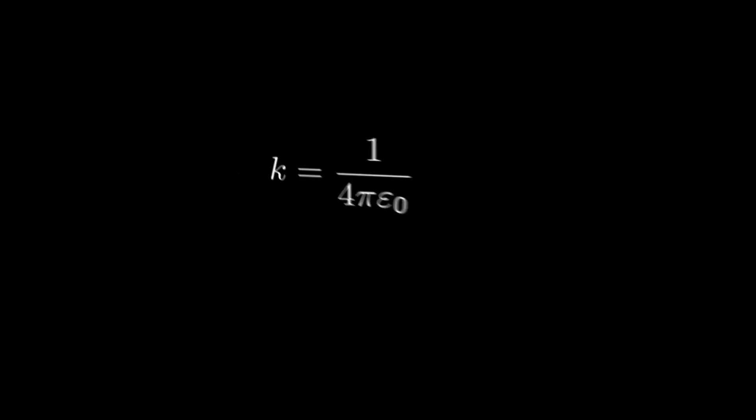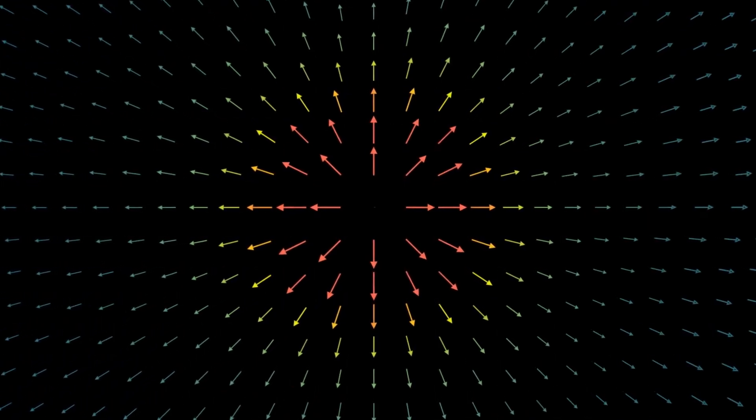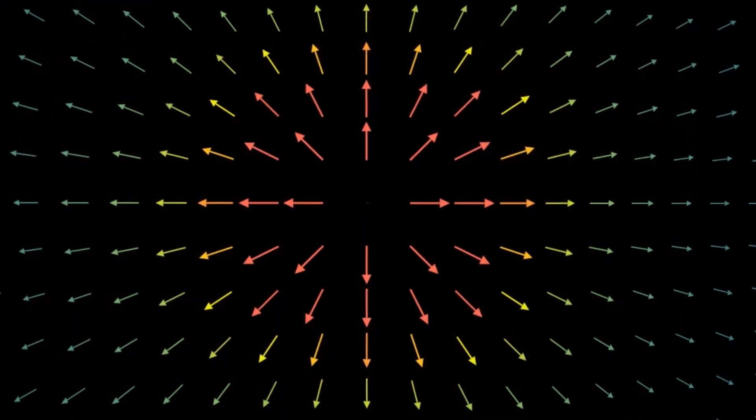You may notice that I am replacing Coulomb's constant with this other term. This is because Coulomb's constant can be described in terms of this epsilon-naught value, which is the permittivity of free space. This constant represents the capacity a vacuum has to permit an electric field, and is approximately equal to 8.854 times 10 to the negative 12 farads per meter. Since it is a more fundamental constant than k, we usually ignore writing the k directly.